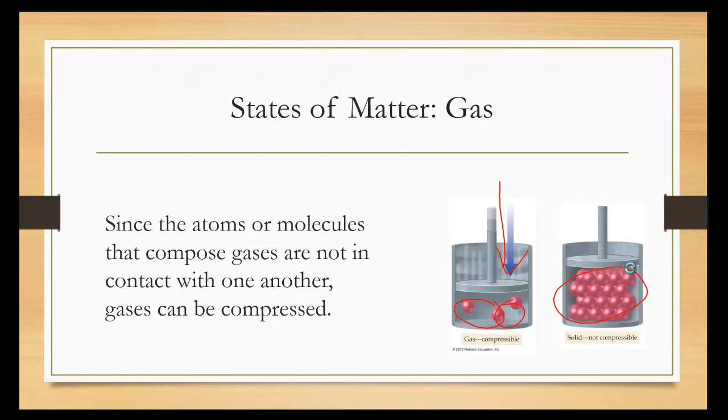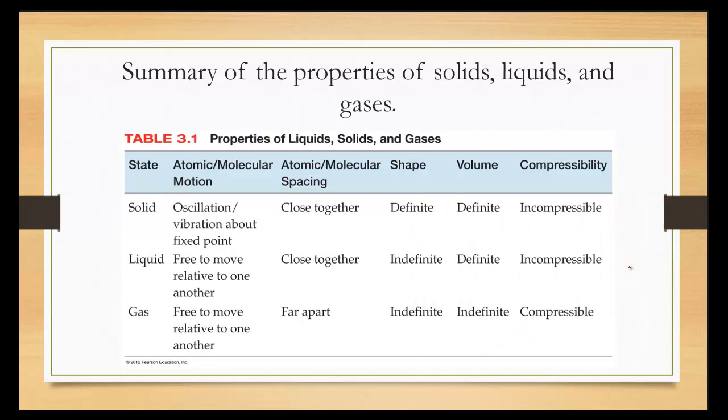So here's a summary. We have solid, liquid, and gas. With solids and liquids, they're both close together. Whereas the solid can take the shape, has their own shape. Whereas the liquids take the shape of the container. Notice that gas is the only one that's far apart from each other. It's the only one that's compressible.